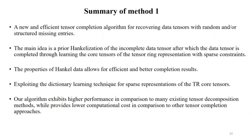In summary for our first method, we propose a new and efficient tensor completion algorithm for recovering data tensors with random or structurally missing entries. The main idea is to apply a prior hankelization to generate a higher-order tensor with a shift-invariant structure, which enables better completion. We also exploit dictionary learning techniques on the core tensors. Our algorithm exhibits higher performance compared to many other tensor decomposition and completion algorithms in terms of computation cost, relative squared error, and reconstruction quality.